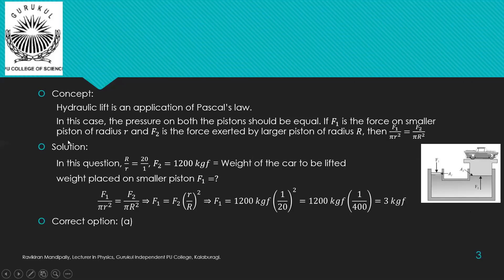If f1 is the force applied on the smaller piston of radius r, and f2 is the force exerted by the larger piston of radius R, then the pressure at both points must be equal: f1 / (πr²) = f2 / (πR²). As per the question, R/r = 20/1. The weight of the car to be lifted equals f2, so f2 = 1200 kg force.